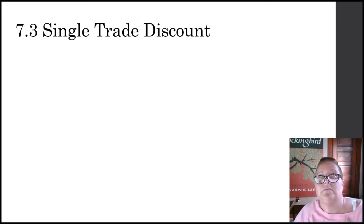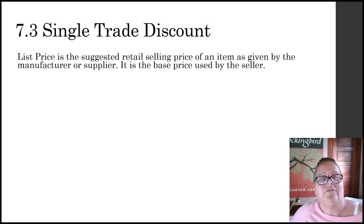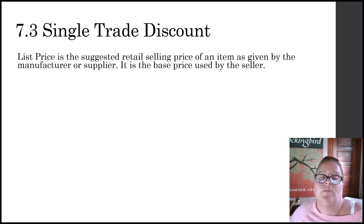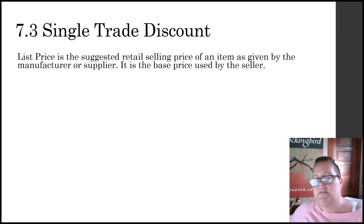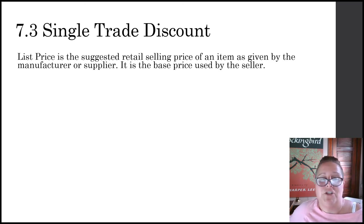This is subsection 7.3 — the single trade discount. In order to start, we have to understand that the list price is what everybody starts with. It is the suggested retail selling price, and it's given by either the manufacturer of an item or a supplier. At this point in the course, we are not talking about consumables for you as a customer walking into Kohl's or Festival, but rather Kohl's or Festival purchasing from another business.